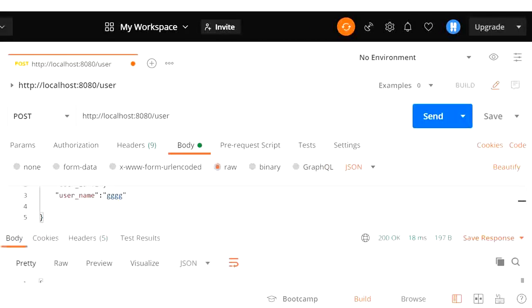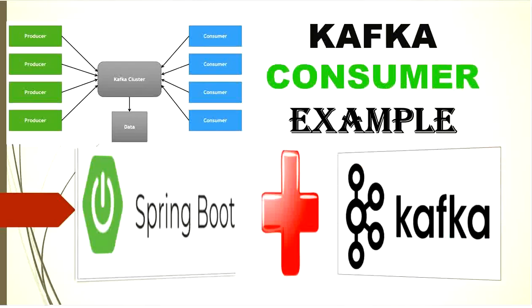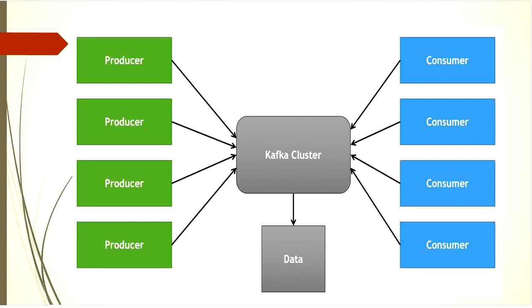Today we are going to create a simple Kafka consumer. This consumer will consume the message from a Kafka topic, and that message will be published from the Kafka producer. We'll demonstrate how to process records from a Kafka topic with a Kafka consumer. In the previous video we created a Kafka producer and a replicated topic called 'my-topic'.